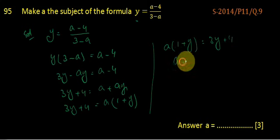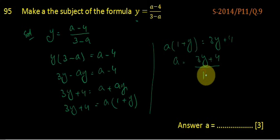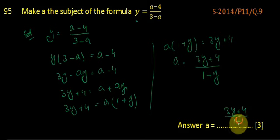Or we can make A the subject as 3Y plus 4 after shifting this 1 plus Y to the denominator. So A becomes 3Y plus 4 divided by 1 plus Y.